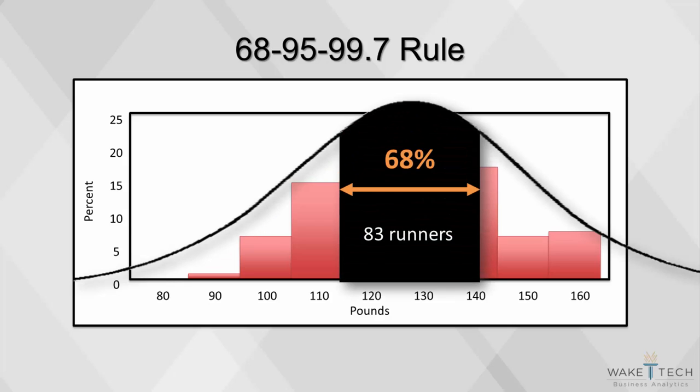68% of our 120 runners is about 83 runners. According to the 68-95-99.7 rule, those runners should all fall within one standard deviation of the mean weight of 127.8 pounds. That is, 83 of our runners should fall between 112.3 and 143.3 pounds. When we check our data, we see that 79 runners fall within one standard deviation of the mean.